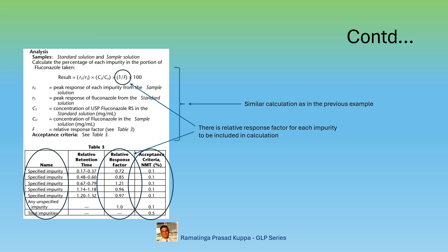The limit for specified impurity is given as not more than 0.1% individually. Since the specified impurity could be unidentified impurity also, it is limited to not more than 0.1%. If the specified impurity is identified, it could be more than 0.1%.